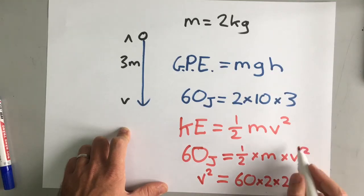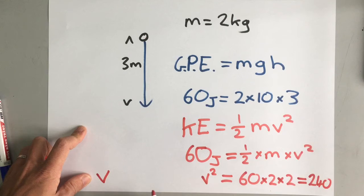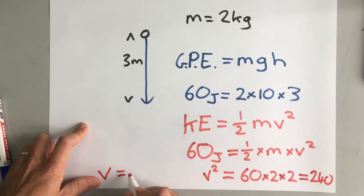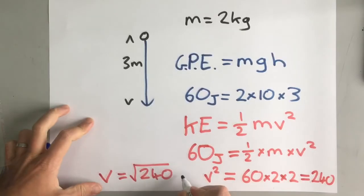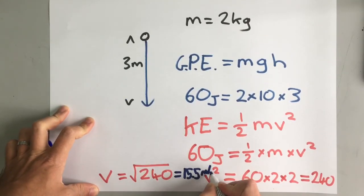And that gives you the velocity squared. So, the velocity squared is 60 times two, times two, which is 120, 240. So, the velocity is the square root of 240. And that is 15.5 meters per second.